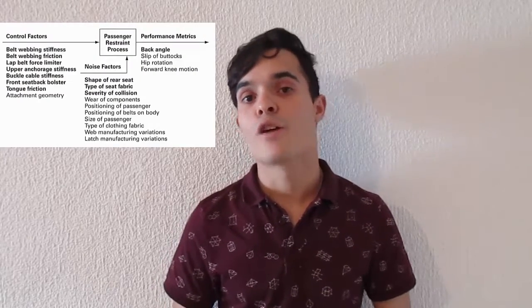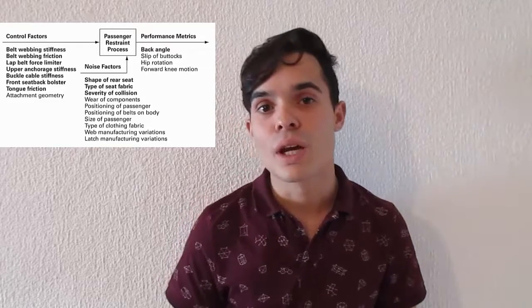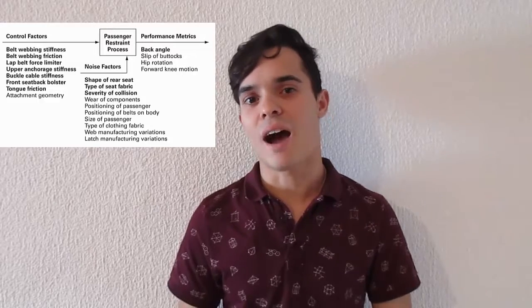Step 1: Identify control factors, noise factors, and performance metrics. Control factors are design variables that can be varied in a controlled manner during the experiment. Noise factors are variables that can be varied during manufacturing and operations of the product. Performance metrics are product specifications of interest in the experiment. After listing several factors, the team must decide which ones they want to investigate. In the case of Ford Motor Company, they chose seven control factors, three noise factors, and decided to use the back angle at peak as the output metric.